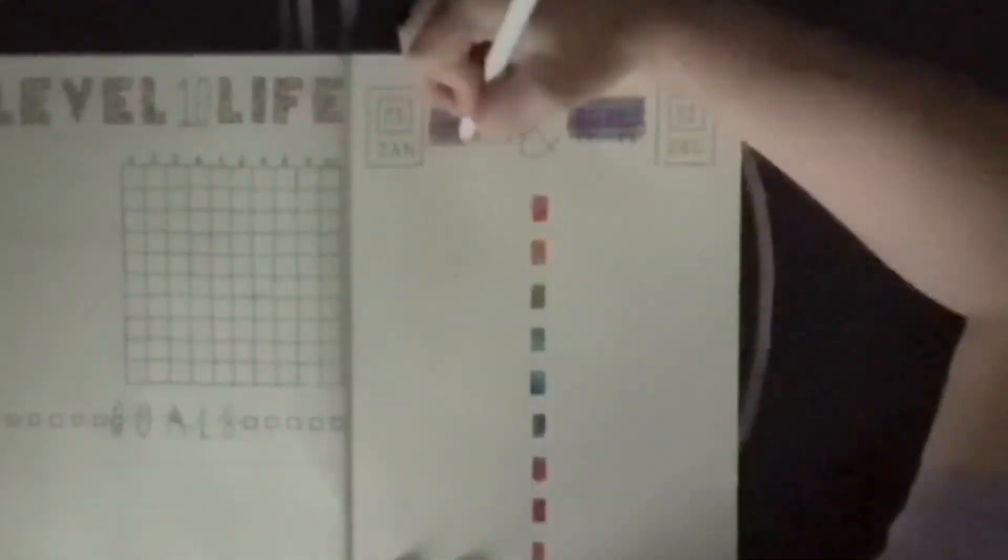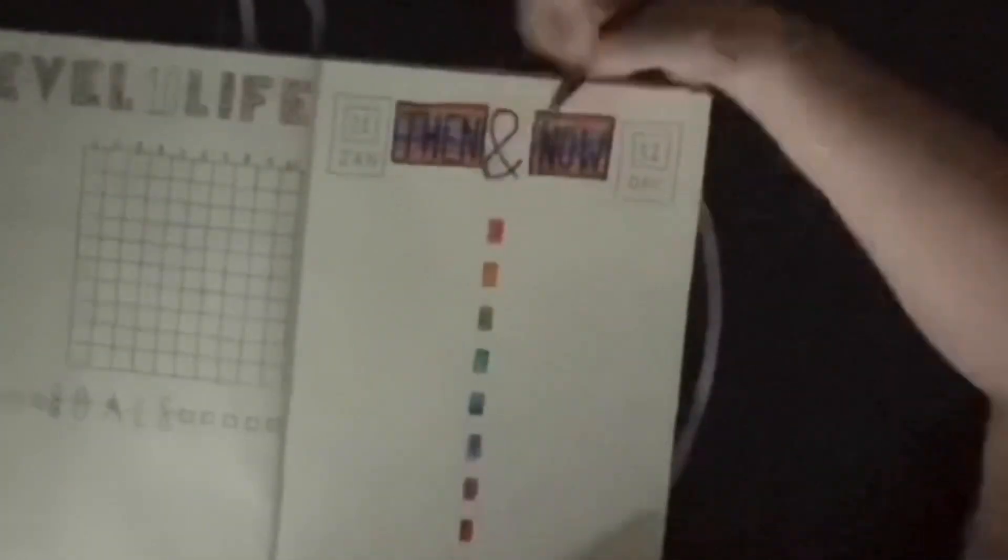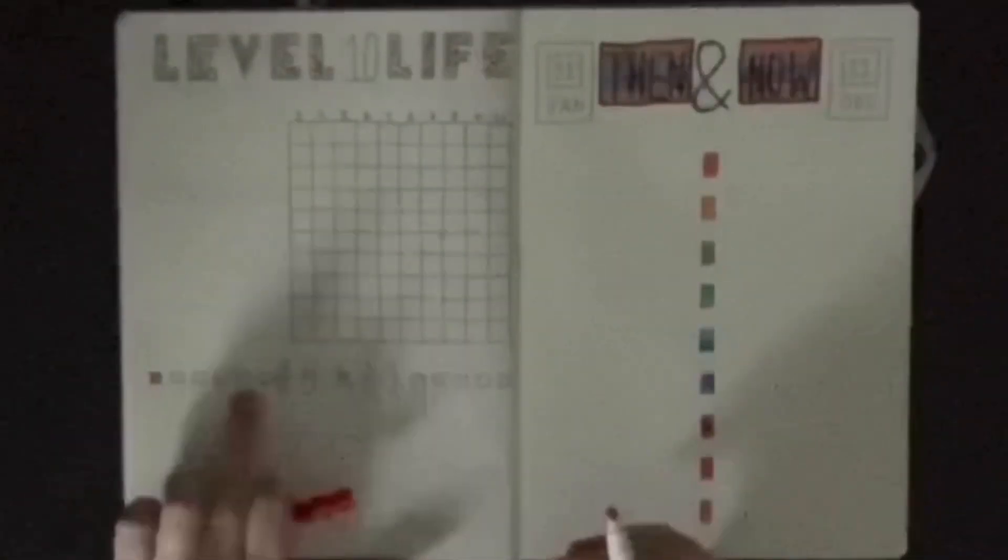On this next spread, it's my Then and Now spread. So I just split it down the middle, went in a rainbow gradient using my Super Tips, and I did a rainbow gradient for the title as well. So I started with purple in the middle and worked outwards both directions in the rainbow. And again, I'll fill that in at the end so you can see what I tracked.